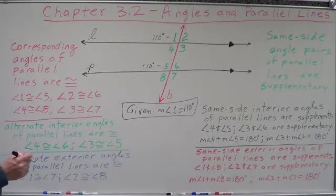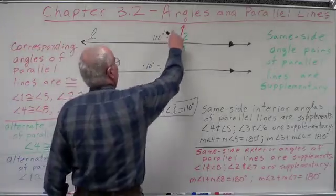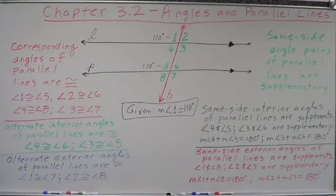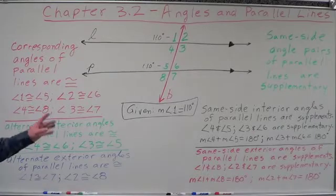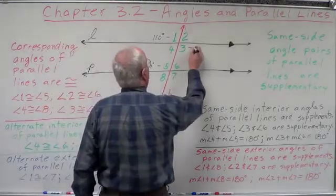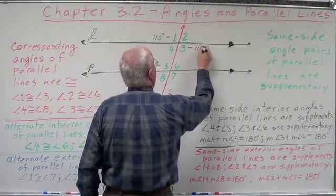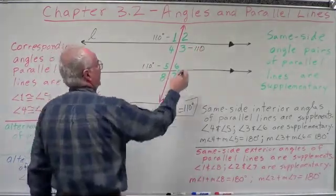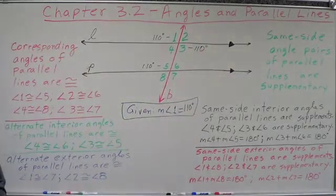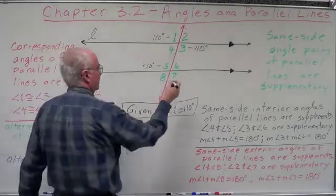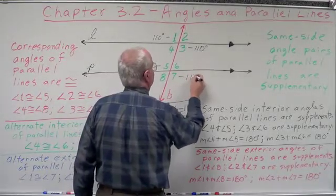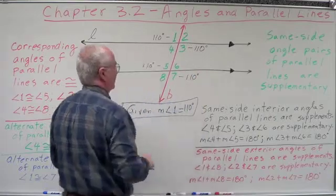Now, what do we know just by looking at this about angle 1 and angle 3? They're vertical angles. Vertical angles of intersecting lines are congruent, so angle 3 has to be 110. And what does that mean about angle 7? Angle 5 and 7 are vertical angles, so that means angle 7 is also 110 degrees.